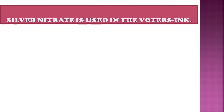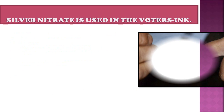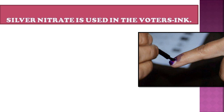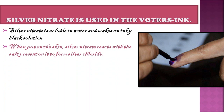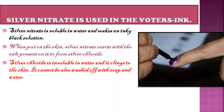Silver nitrate is used in voter's ink — the ink put on our finger after voting. Silver nitrate is soluble in water and makes an inky black solution, as you can observe in the picture. When put on the skin, silver nitrate reacts with the salt present on the skin to form silver chloride (AgCl). Silver chloride is insoluble in water, clings to the skin, and cannot be washed off with soap and water, which is why it remains on the skin for a longer time.